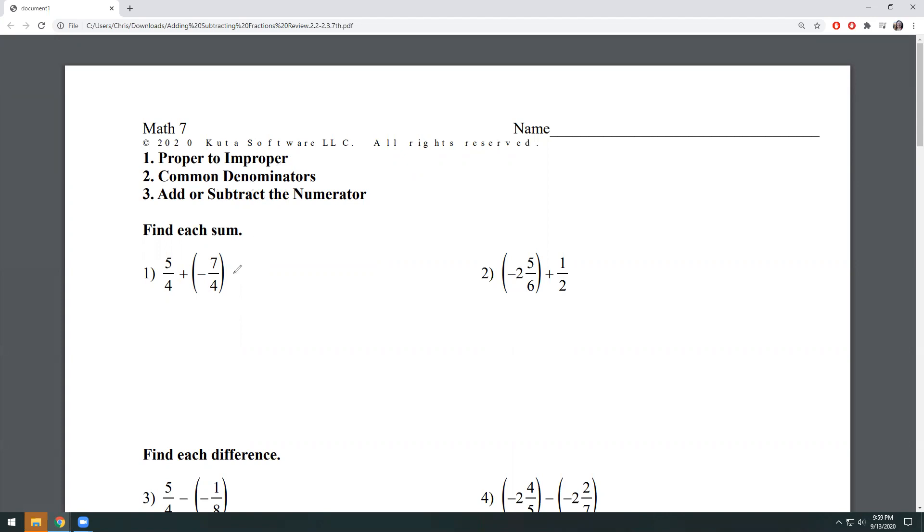The next thing that I'm going to do is add or subtract my numerator. So for this problem, I am looking at five plus negative seven. You're allowed to use a calculator for this section. So if you don't know what this is off the top of your head or you're questioning yourself, just use the calculator to double check. So we've got a positive five plus a negative seven, that gives us a negative two.